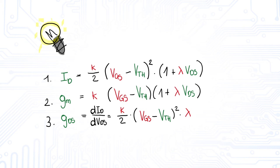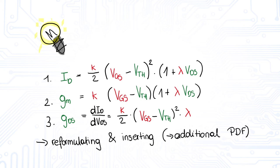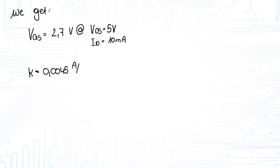We again reformulate the equations to an unknown value and insert them into the other equations as we did it for the calculation of Vout to Vin. We will not do all the steps in this video because it just takes too much time. We will provide a PDF file for you with all the calculation steps. After the reformulation and inserting the values, we get VGS is 2.7 V at the operating point of VDS is 5 V and ID is 10 mA.